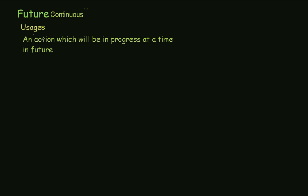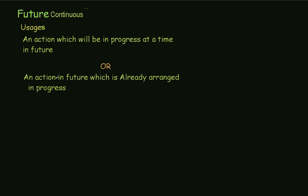The first usage is an action which will be in progress at a time in the future. The second usage is an action in the future which is already arranged in progress. The third usage is a polite way of asking others' plans. These are all the usages of future continuous.